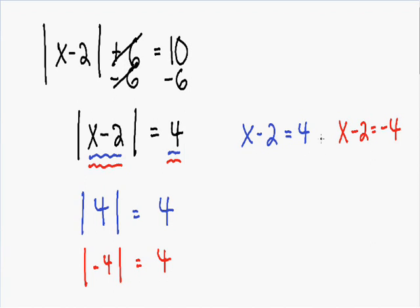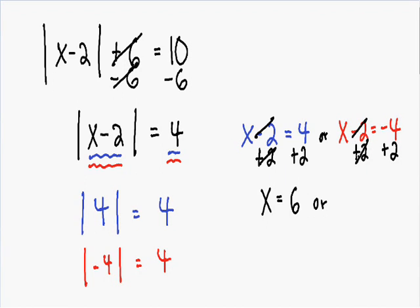We have x minus 2 is equal to 4, or x minus 2 is equal to negative 4. Let's solve both equations for x. If we add 2 to both sides, the negative 2 and positive 2 cancel out, leaving x equal to 4 plus 2, which is positive 6. For the other equation, adding 2 to both sides gives x equal to negative 4 plus 2, which is negative 2. So we have two solutions: x is equal to 6 or x is equal to negative 2.